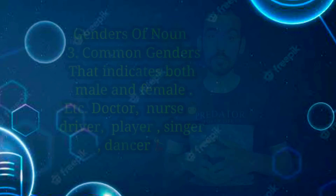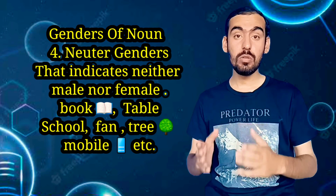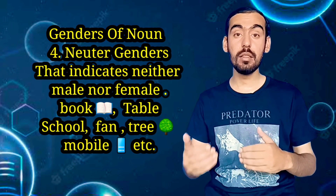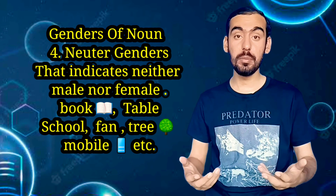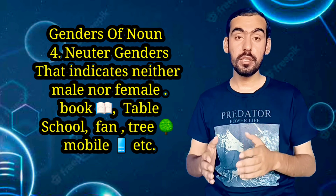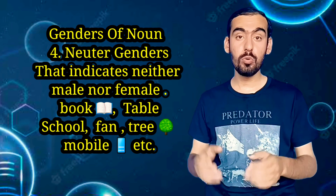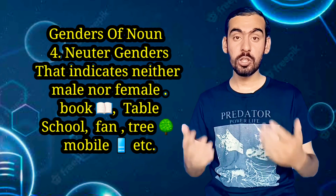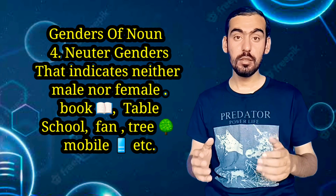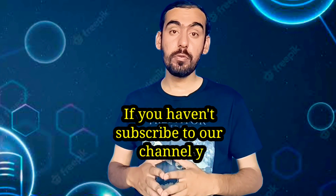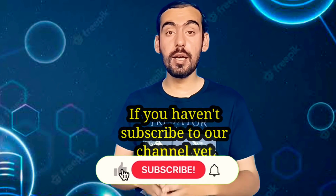What is a neuter gender? A neuter gender indicates that a thing is neither male nor female. For example: book, table, chair, fan, blackboard, mobile, car, tree, school. These are some of the common examples of the neuter gender. If you have any questions regarding this topic, you can ask me in the comment section.